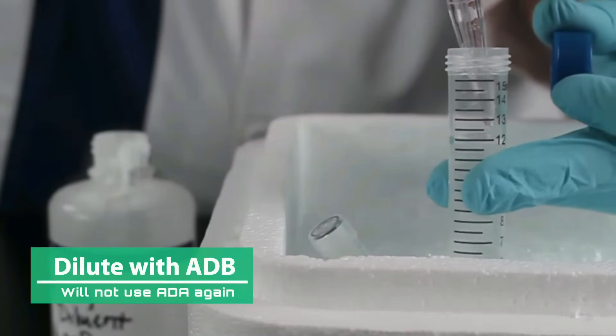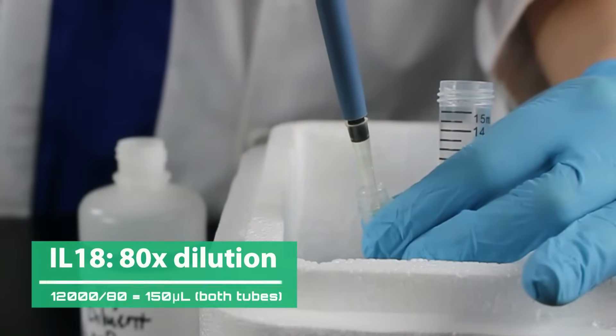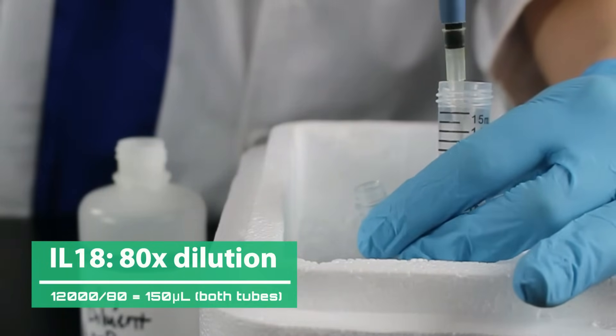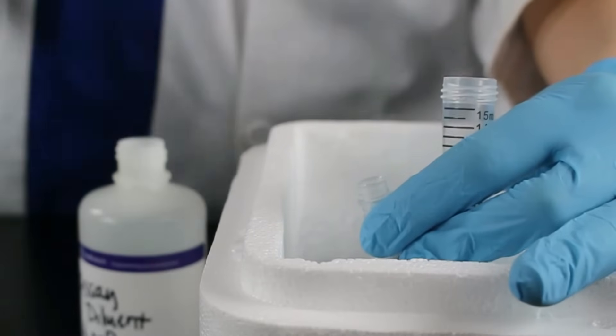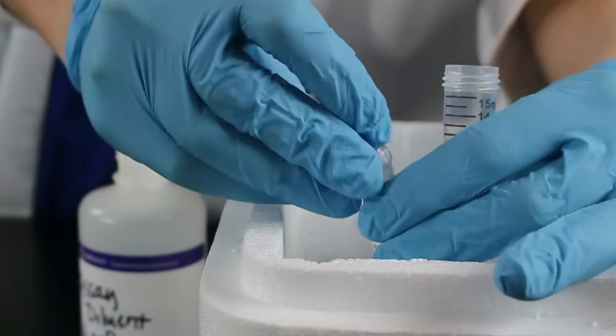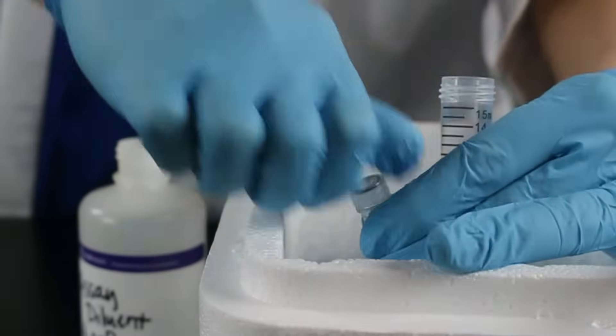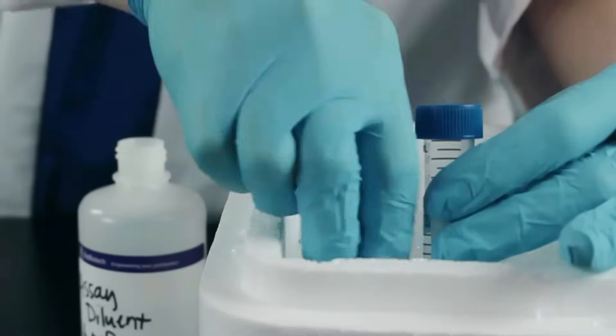Regardless of sample type, the dilution volume is with ADB and you will not use ADA again. Detection antibody of IL-18 requires a 160x dilution, so we will add 150 microliters. Once samples are done incubating and you are ready to add your detection antibody, you can go ahead and wash your plate.